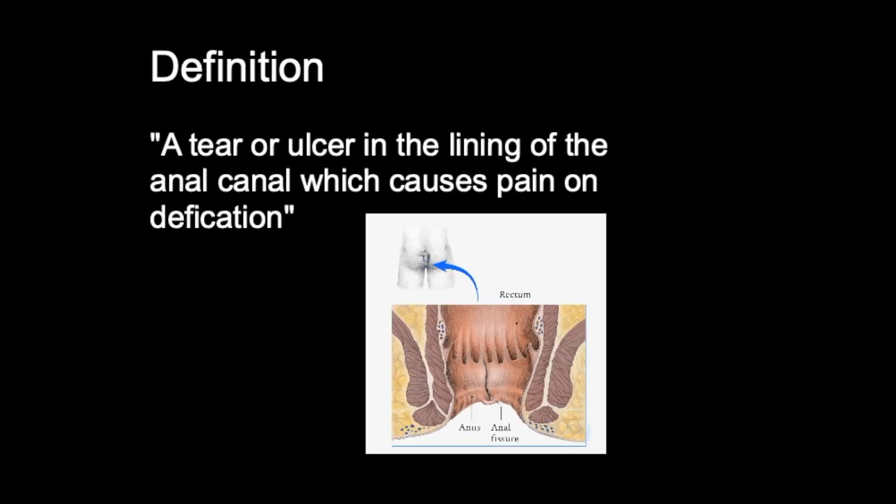So let's start with a definition of an anal fissure. An anal fissure is a tear or ulcer in the lining of the anal canal that typically causes pain on defecation. Here in this picture you can see the rectum or back passage, and here you can see this line or split which is an anal fissure.